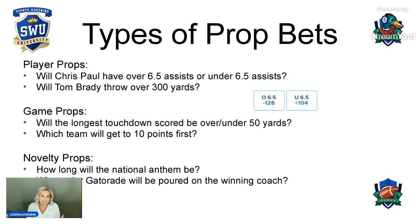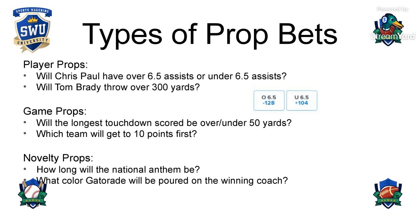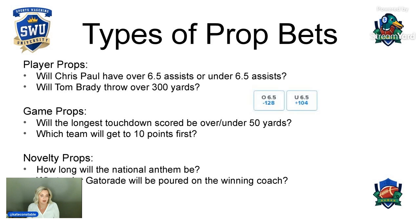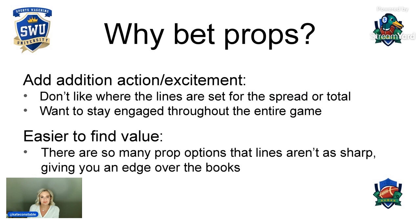And then you have novelty props. These are more prevalent in big events like the Super Bowl. How long will the national anthem be? You're guessing whether it's going to surpass a certain amount of time or stay under that amount of time. And what color Gatorade will be poured on the winning coach? This gives you more than just two options of an over or under — you have blue Gatorade, orange, red, clear, so many different options. But those novelty props are used more so just in these really big games and events, and are more so to bet on just for fun rather than finding any real value in those props.